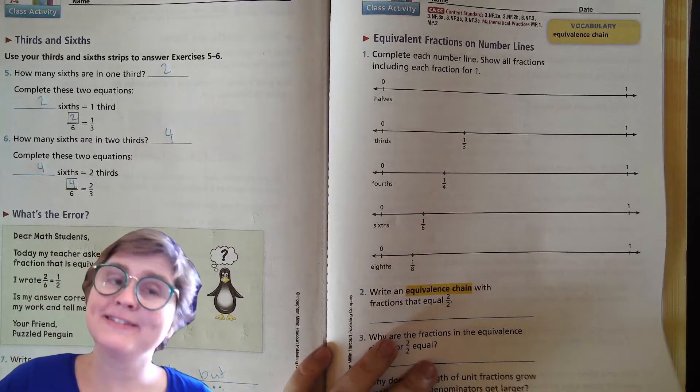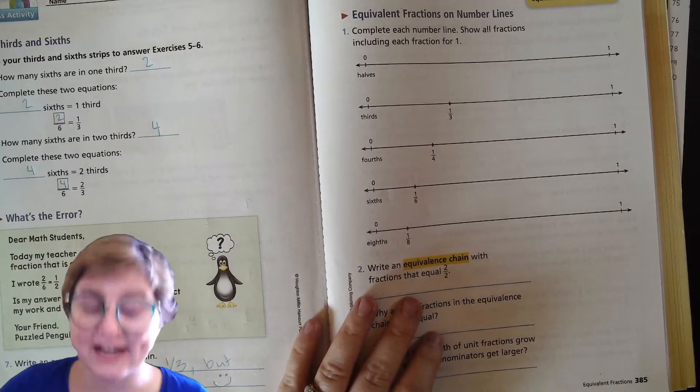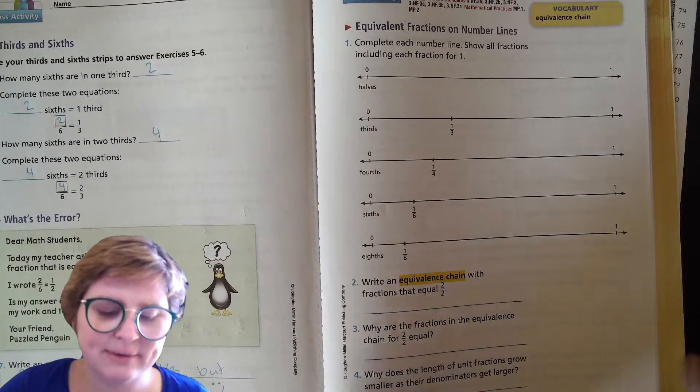Hello my third grade friends, this is Mrs. Smith here. Today we are doing Unit 7 Lesson 7, which is on page 385. So we're talking about equivalent fractions on number lines.